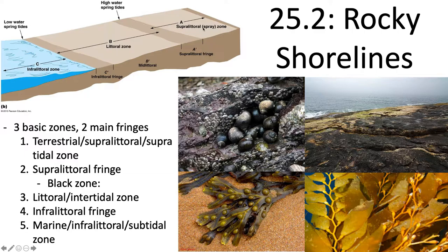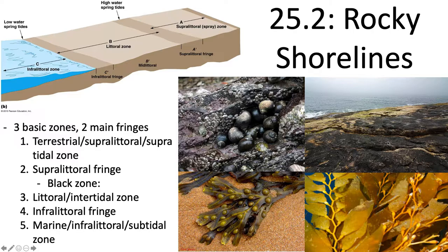Then you have the supralitoral fringe between the supralitoral zone and the littoral zone. In the supralitoral zone, you can have a 'black zone' — a thin layer of Calothrix cyanobacteria that grows on the rocks. The supralitoral fringe is the first major change from the terrestrial environment; you really only get saltwater here every two weeks during the spring tides.